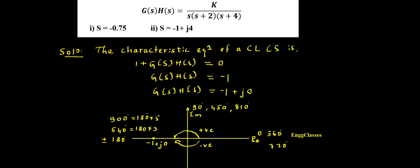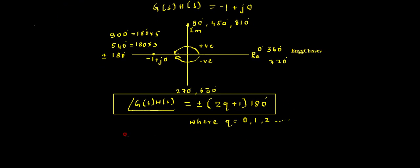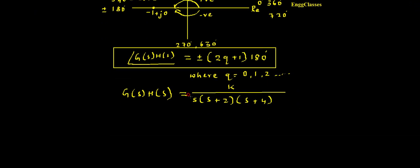Moving on, I need to test the angle condition for the given system G(s)H(s) for the point s = -0.75. G(s)H(s) = k divided by s(s+2)(s+4). For this, I need to test the point s = -0.75. I replace s with -0.75 in this expression and find the angle.